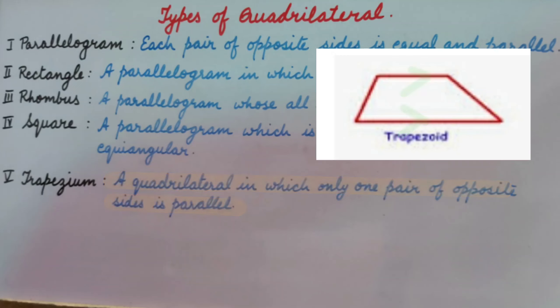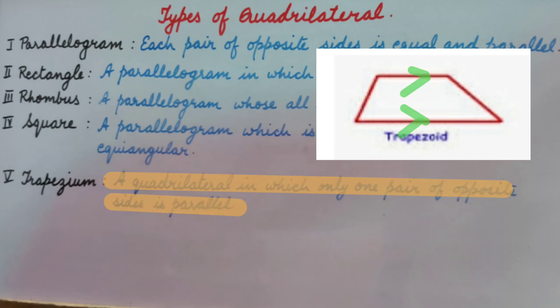Trapezium. A quadrilateral in which only one pair of opposite sides is parallel is a trapezium. The sides which are parallel in a trapezium are called its bases.